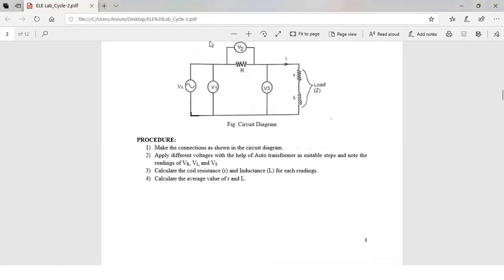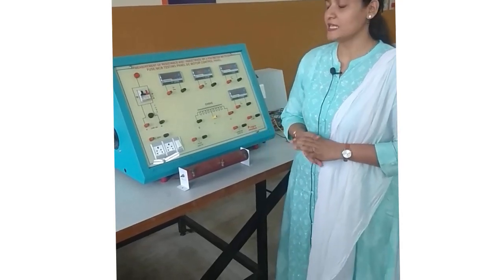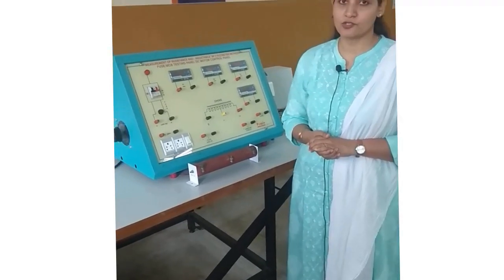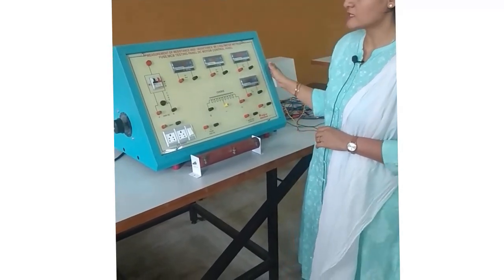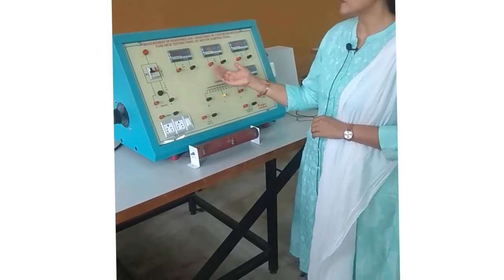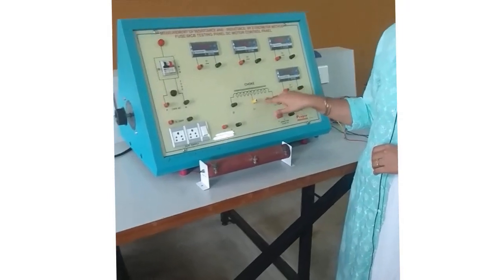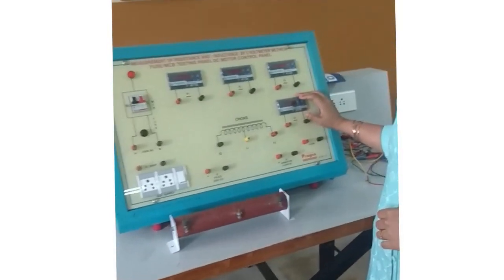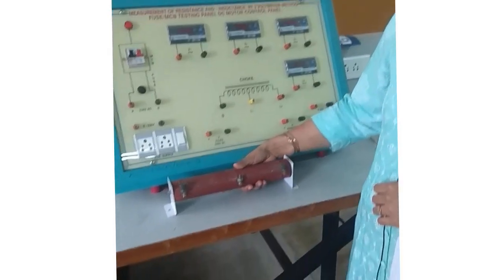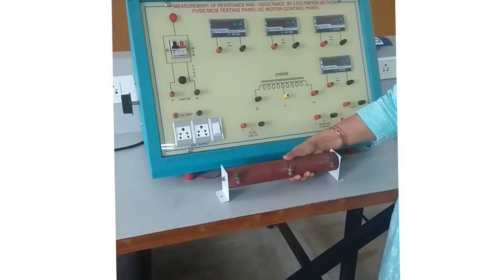Now let's see the connection for measurement of resistance and inductance of a choke coil. This is the kit where we will be using the 3 voltmeter method. You can see there are 3 voltmeters, and this is the choke coil of which we need to find out the resistance and the inductance. There is an ammeter connected to measure the current, and this is an external resistance whose value is around 500 ohms.